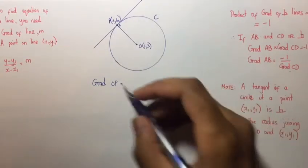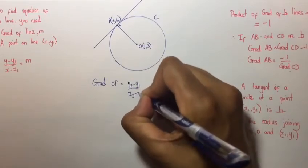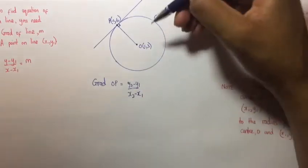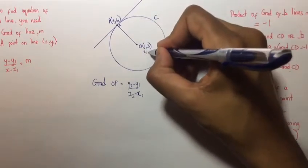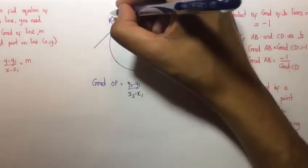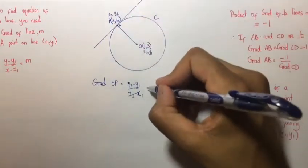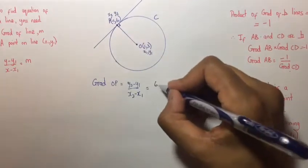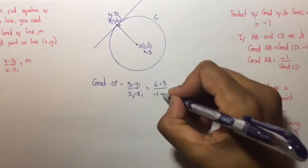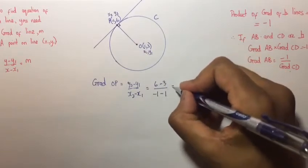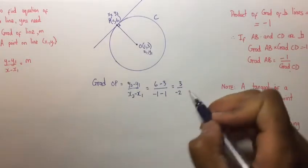The gradient of OP is simply Y2 minus Y1 over X2 minus X1. From the previous question, we know that the center is (1, 3). Let's label this X1, Y1, and let's label point P as X2, Y2. So, the gradient OP is simply 6 minus 3 divided by minus 1 minus 1.